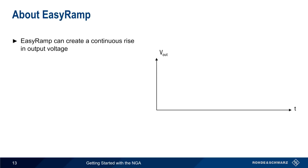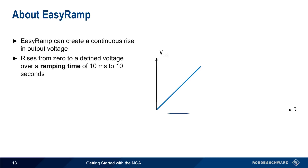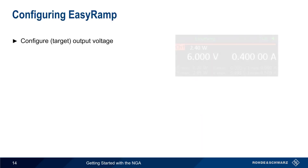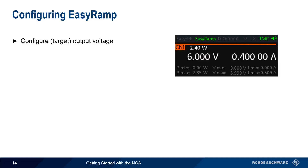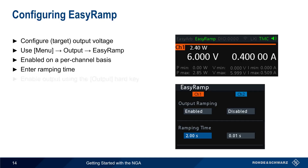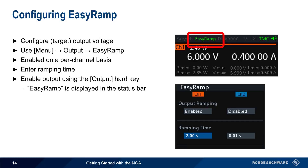As the name implies, EZRAMP is used to create a continuous rise, or ramp, in the output voltage. The output voltage starts at zero and then rises to a defined voltage over a ramping time from 10 milliseconds to 10 seconds, after which it remains constant. To configure EZRAMP on the NGA, first configure the final or target output voltage as usual. Then press the menu hard key and select output EZRAMP. EZRAMP is enabled on a per channel basis, the only parameter being the ramping time needed to change from zero volts to the final output voltage. Once EZRAMP has been configured, ramped output is enabled using the output hard key. Note that during operation, EZRAMP is displayed in the status bar.